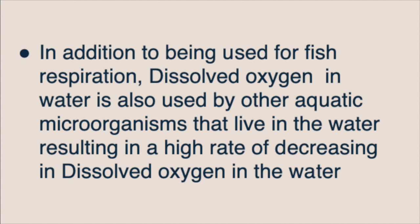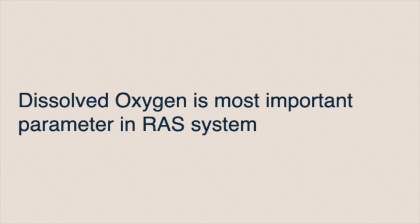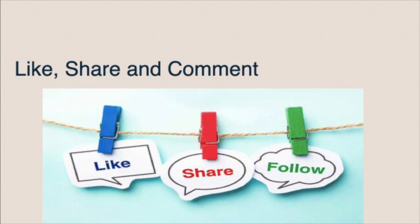Maintaining more than the minimum DO level is essential. Fish growth and high stocking density both depend on dissolved oxygen. Dissolved oxygen is the most important parameter in a RAS system, so check your O2 level daily — successful fish production depends on good oxygen management.